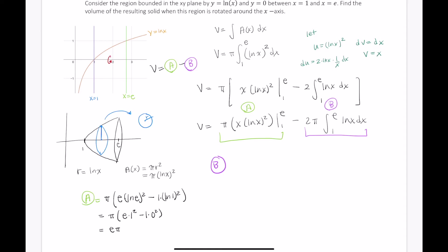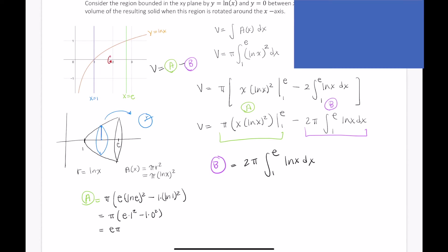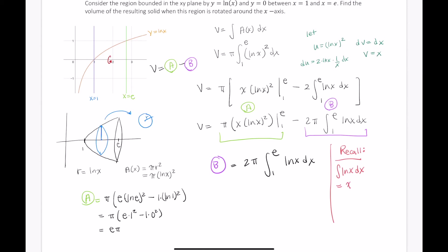So B is equal to 2π times the integral of 1 to e of ln of x dx. And again, I'm leaving the negative off the front because I'm taking that into account here. Now you are expected to have already watched my video where I showed how to integrate ln of x using parts, that the indefinite integral of ln of x dx is equal to x times ln of x minus x plus c. So let's use that here.